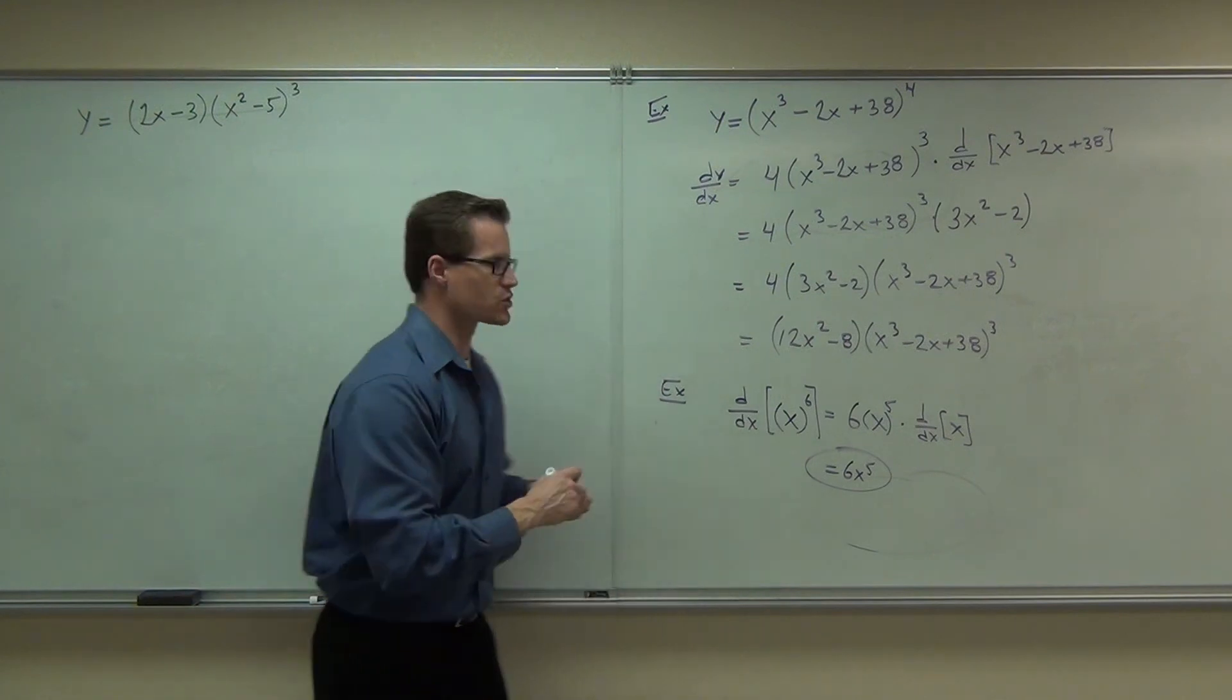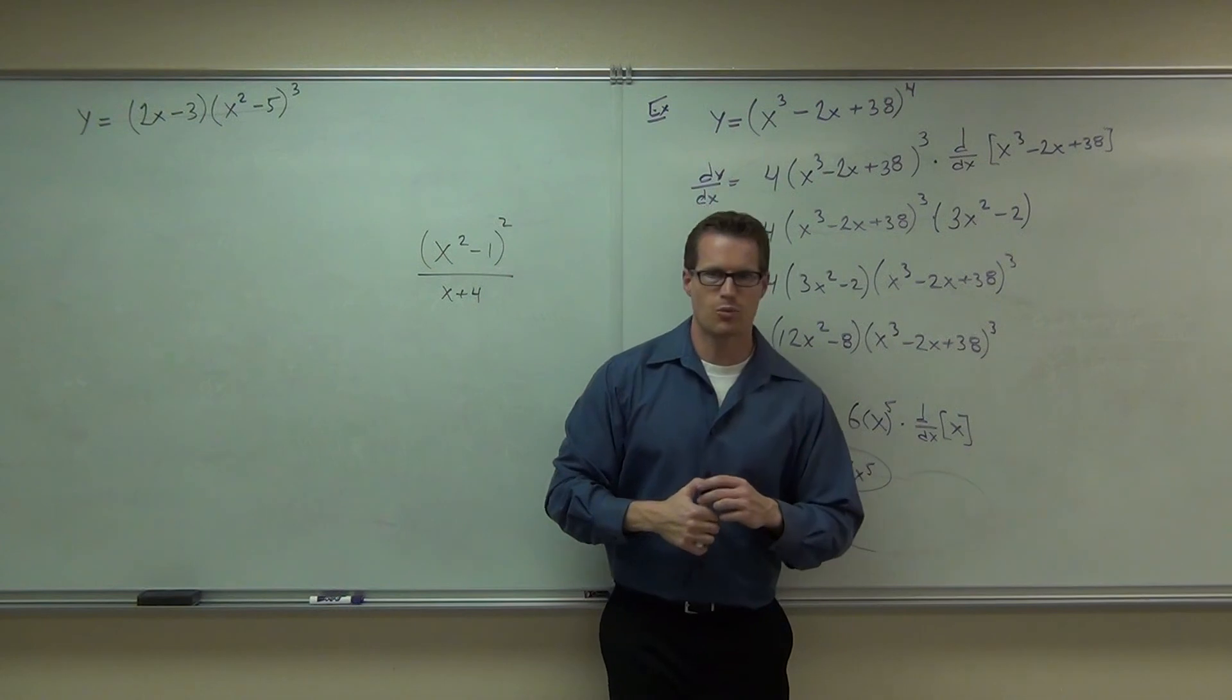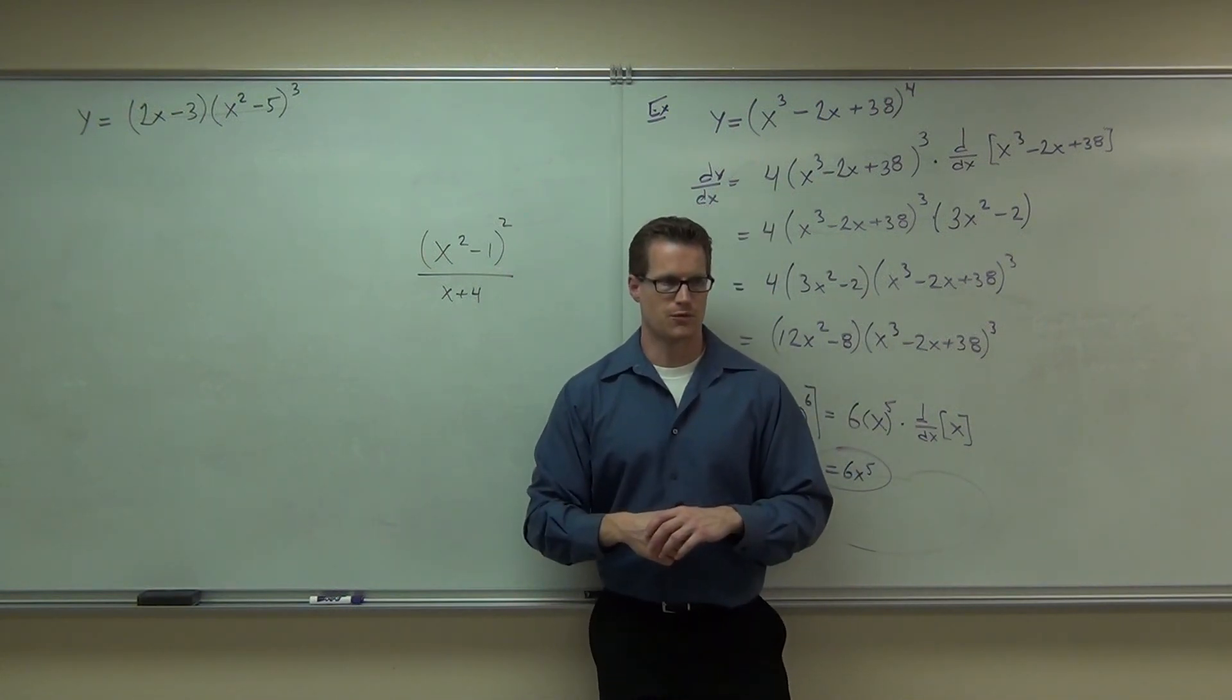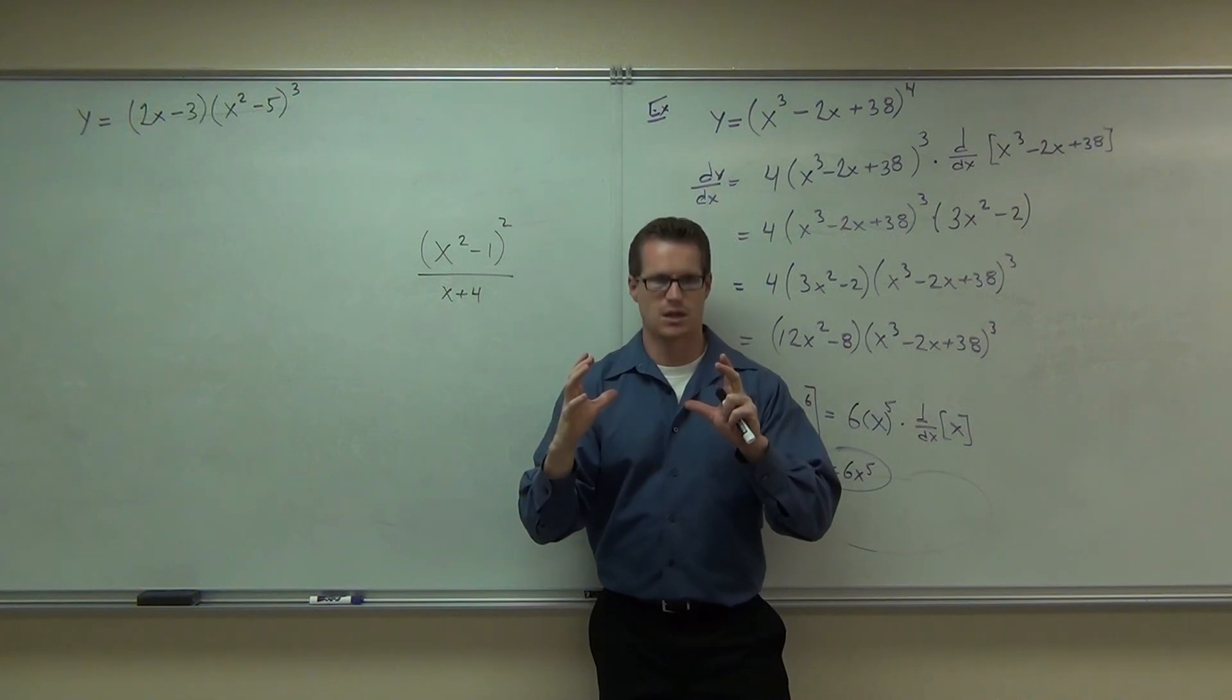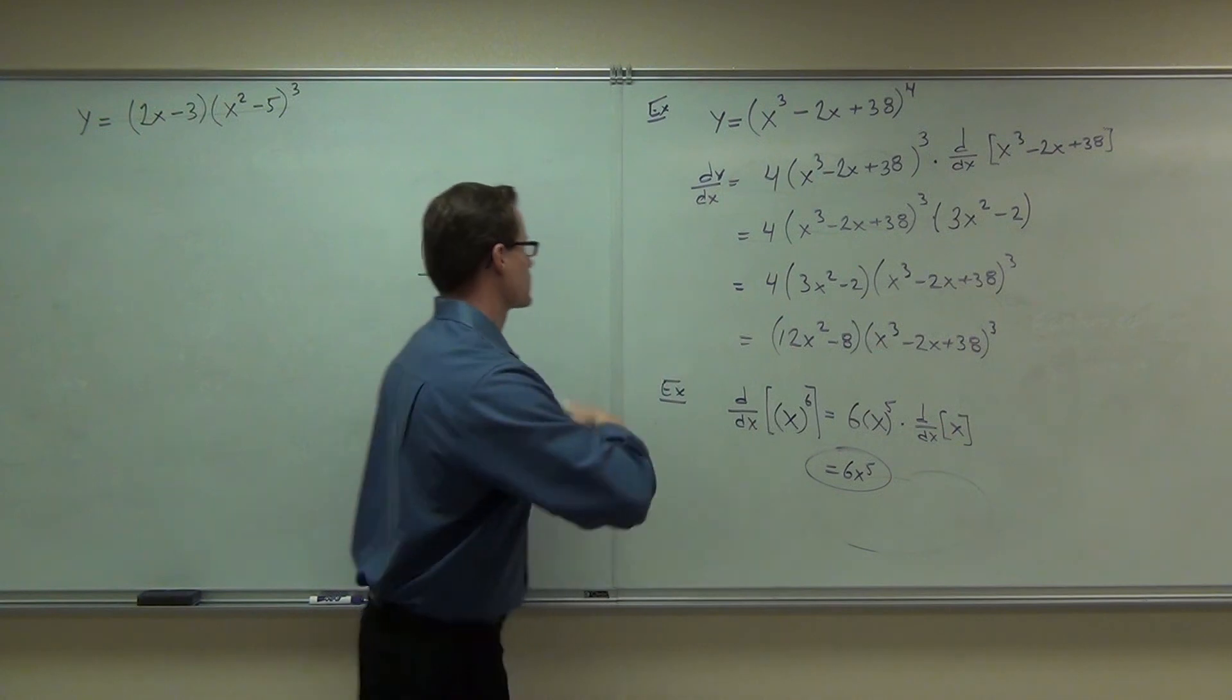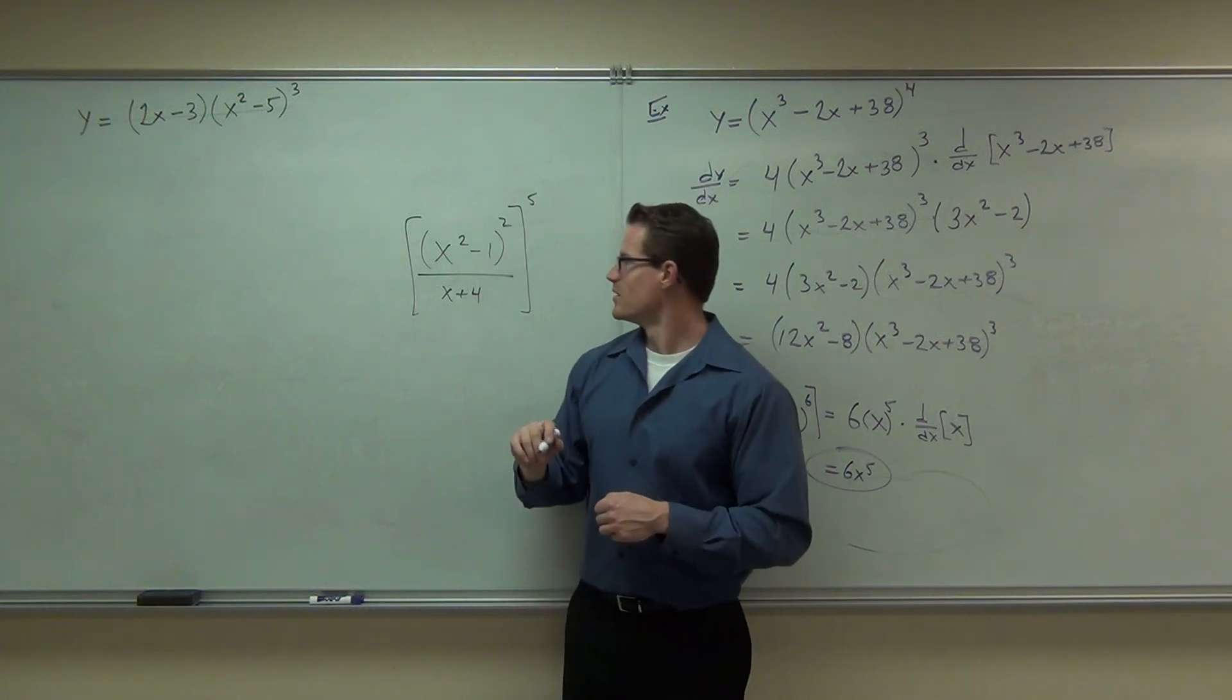Which one would come first? A general power rule or a quotient rule? What do you think? Definitely a, yeah. The general power rule is only applied to this little top part, right? It doesn't encompass the whole problem. The quotient rule encompasses the whole problem. That would come first. Work from the outside inside. Now, if I did this. You'd hate me, first of all. Which would come first?